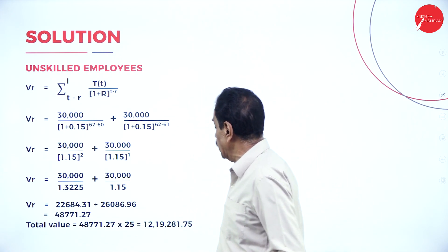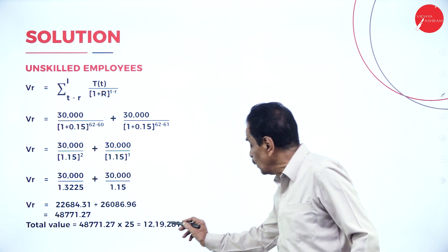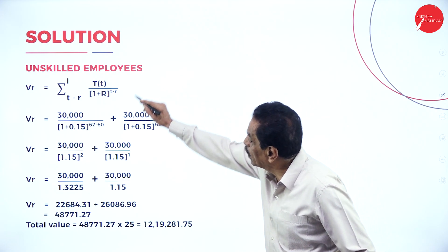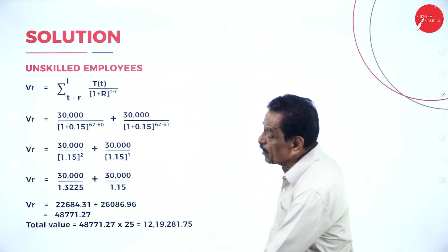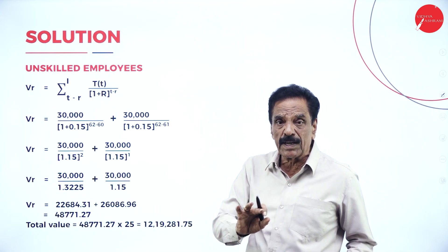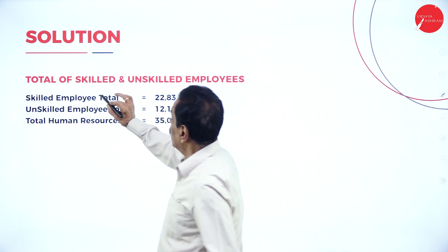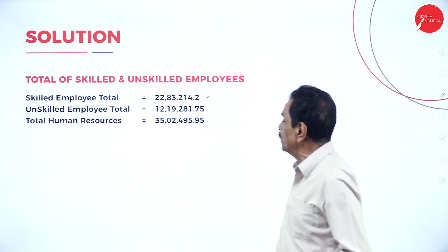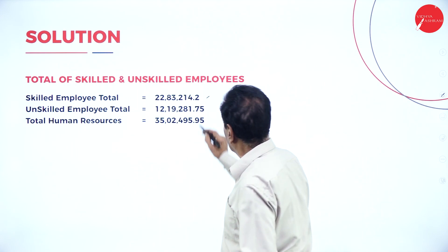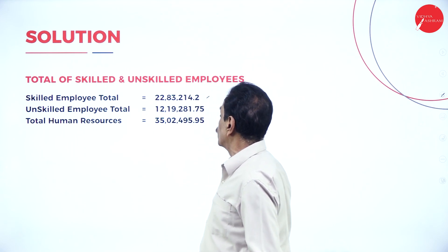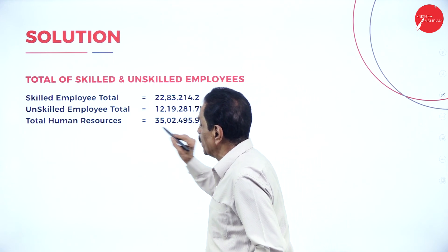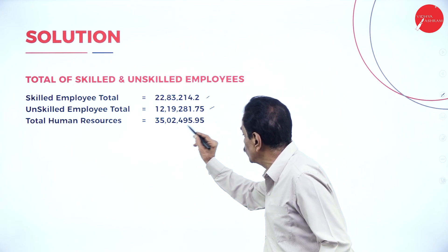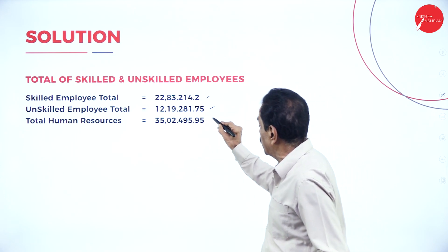For 25 unskilled employees, the total value comes to 12,19,281.75. The skilled employee total is 22,83,214.2 and the unskilled employee total is 12,19,281.75 (approximately 12,19,28.5). Adding both gives the total human resources value of 35,02,495.95.